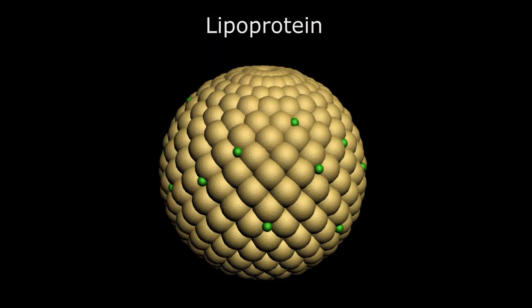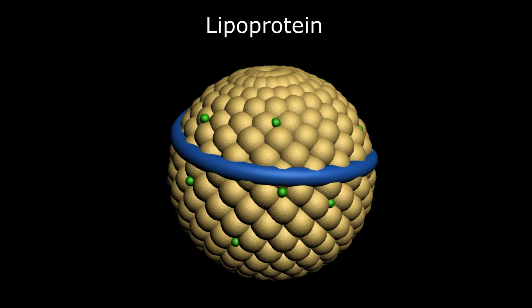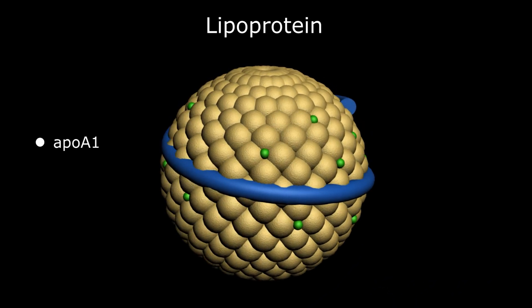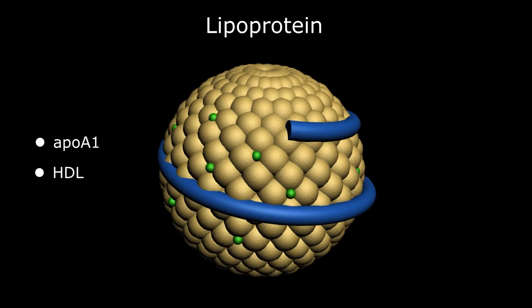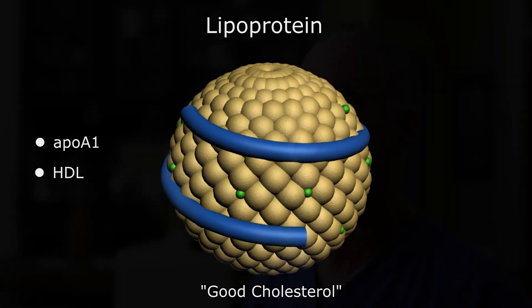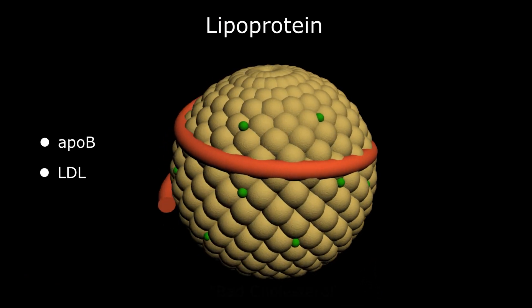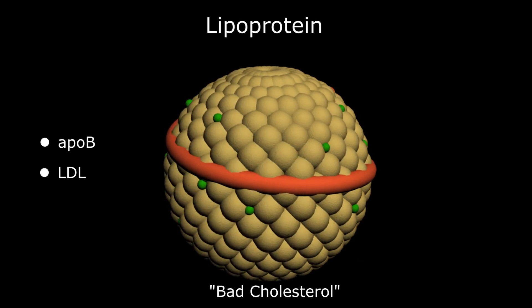Around the outside of these lipoproteins is a protein band called an apoprotein, which is basically the carrying card or identifier of that particular particle. For instance, apoprotein A1 is the marker for HDL cholesterol — the so-called good cholesterol — which transports cholesterol from the periphery back to the liver to be processed. Apoprotein B marks low-density lipoprotein, the bad lipoprotein associated with cardiovascular disease and stroke. HDL and LDL aren't inherently bad or good; they're just doing what they need to do. But too much LDL specifically can cause cardiovascular disease.